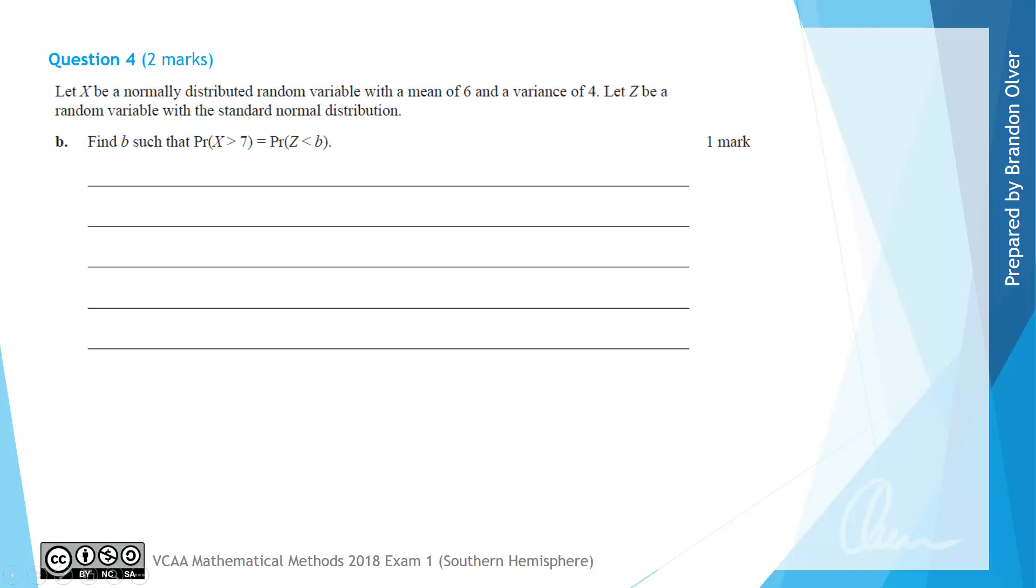For part B we need to find the value B such that the probability X is greater than 7 is equal to the probability Z is less than B. Over to the right hand side we are going to draw two normal distributions, so two symmetric bell shaped curves one on top of the other.